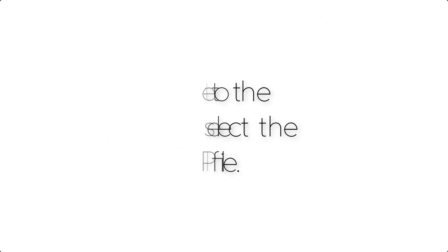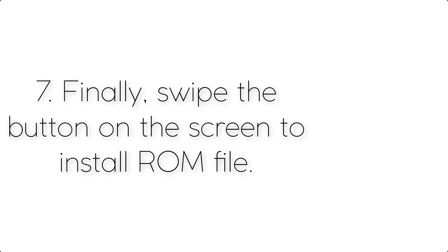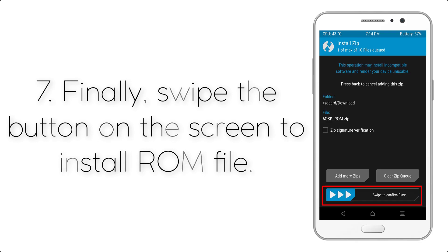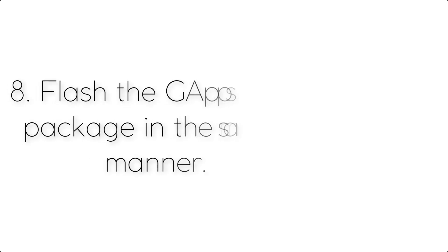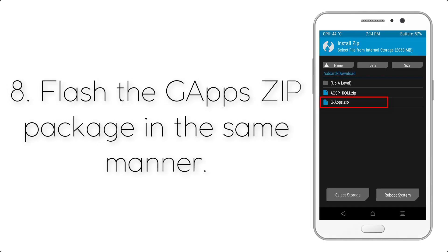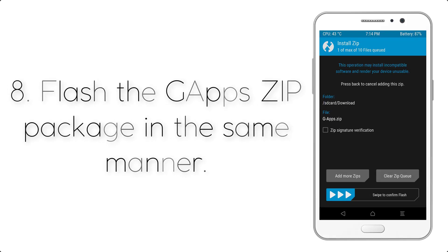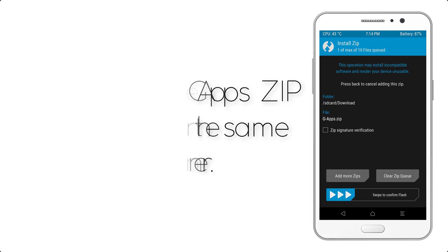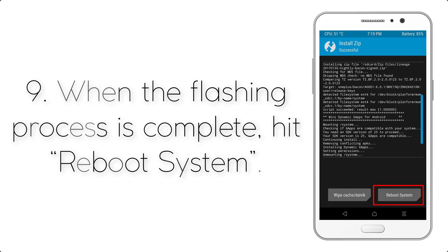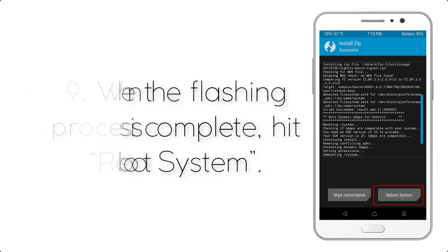Step 6: navigate to the storage and select the ROM zip file. Step 7: finally, swipe the button on the screen to install the selected ROM file. Step 8: flash the GApps zip file in the same manner.